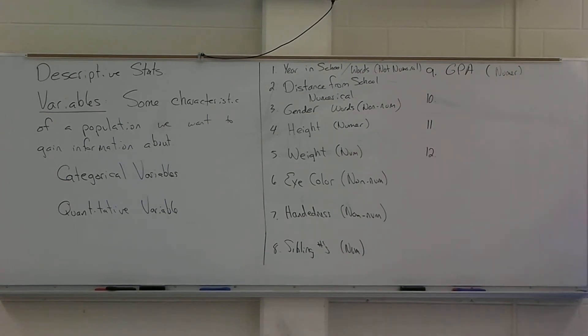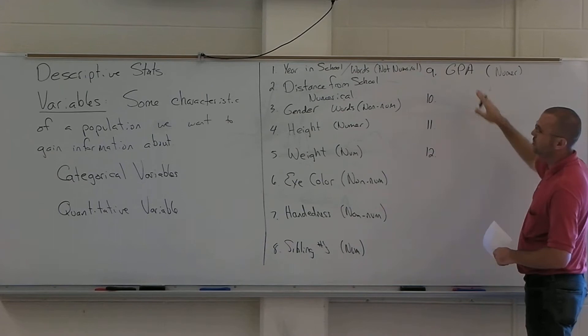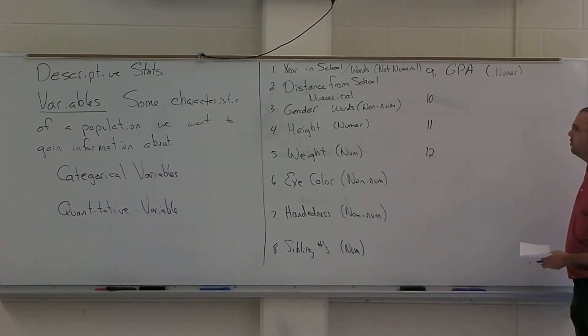You could also make a case for saying that you would just want the letters corresponding to A, A minus, B plus, B, things like that. That would be another way that you could interpret the data you get from that one. But in this particular case the numerical is fine.